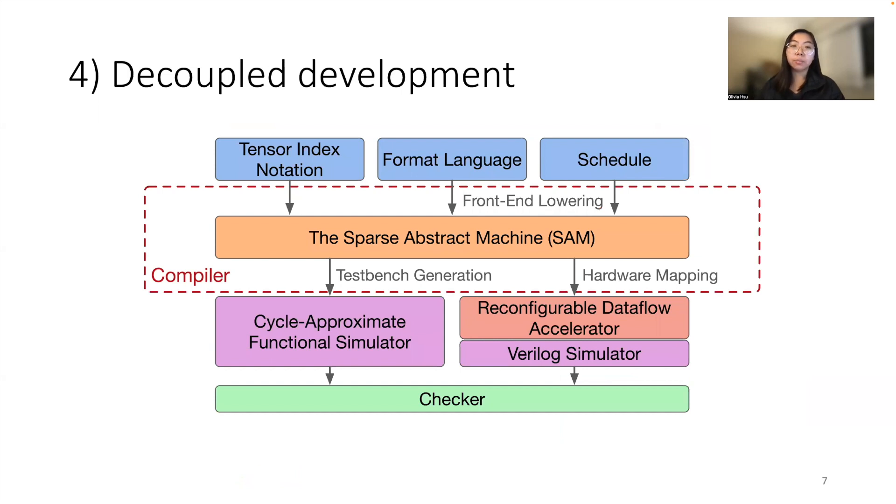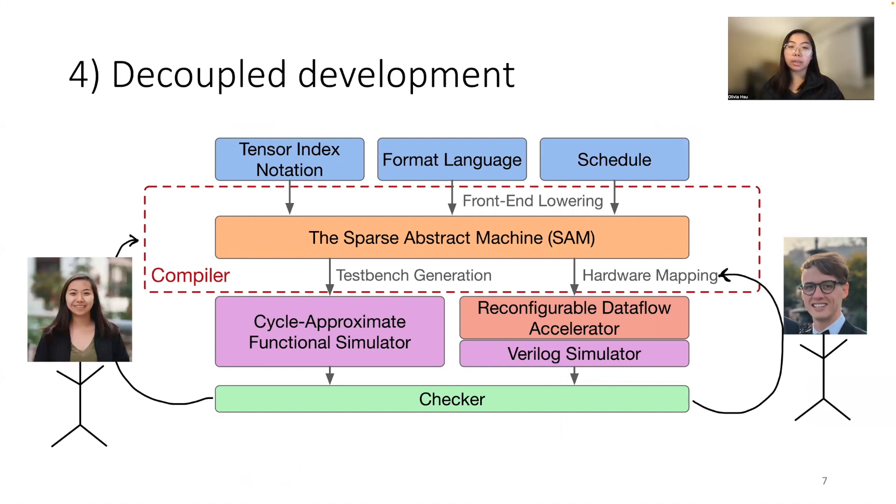The final benefit is decoupled development. In our case, we iterated upon the hardware design and the compiler and functional simulator design in parallel. The abstract machine allowed us to do this because it was a clean interface that decoupled the compiler and functional simulator from the hardware.